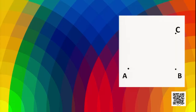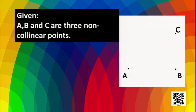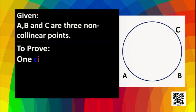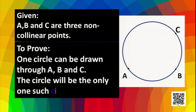But how to prove it logically? We have taken here three points A, B and C which are not on the same line — three non-collinear points. In the given statement: A, B and C are three non-collinear points. We have to prove that one circle can be drawn through A, B and C, and that it will be the only such circle. For construction, we can draw line segments AB and BC, then perpendicularly bisect both.